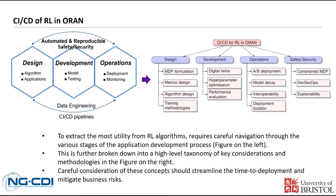Therefore, on this page we attempt to formalize the CI-CD pipeline of RL in O-RAN. As you can see in the left figure, from the top of the pipeline design, we summarize the whole CI-CD process that includes three basic blocks: design, development, and operations. Each block is responsible for different tasks — grouping algorithms and applications in design; model training and testing in development; and deployment and monitoring in operations. Through the interactions of these three blocks, and in conjunction with data engineering, an automated and reproducible RL model CI-CD pipeline is expected to be achieved, while ensuring its safety and security.